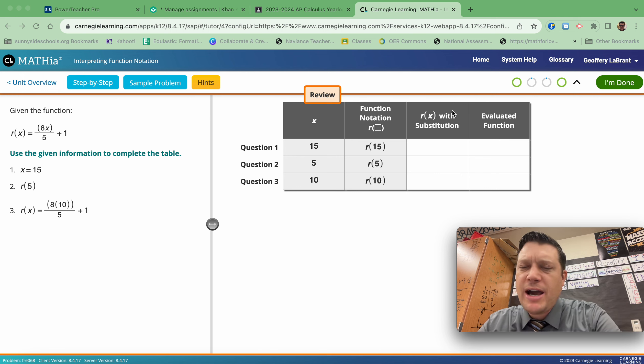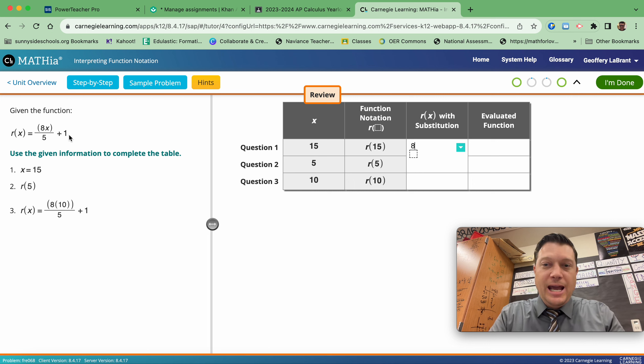When it says R of X with substitution, now I'm going to use the equation 8 times X over 5 plus 1. Not pressing enter yet, but I know in row 1, X is 15.